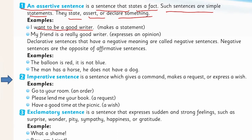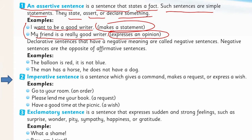Another example: 'My friend is a really good writer.' It expresses an opinion. Both of these sentences are assertive sentences — one is a simple declarative statement and the other expresses an opinion. Declarative sentences that have a negative meaning are called negative sentences.